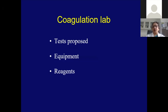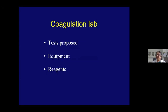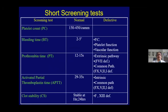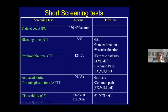Any coagulation lab you have will depend upon what tests are proposed to be done, and depending on the tests, you decide on what equipment and reagents to keep. In any coagulation defect, we start with a group of tests covering the entire coagulation: platelet count, bleeding time (an indicator of platelet and vascular function), prothrombin time (extrinsic and common pathway), activated partial thromboplastin time (intrinsic and common pathway), and a clot stability test (indicator of factor 13 deficiency).